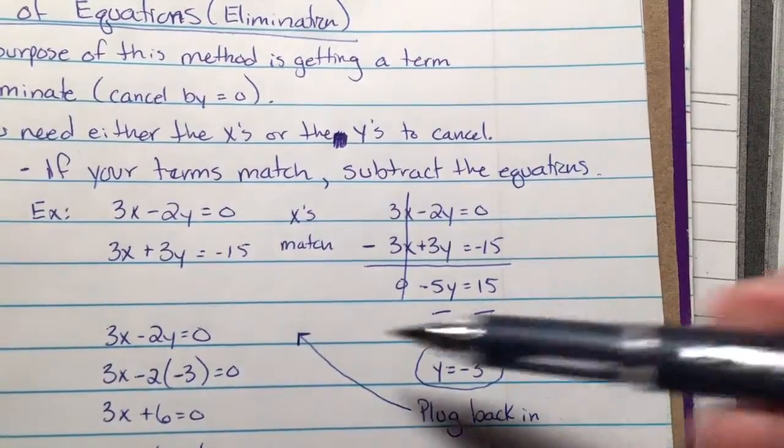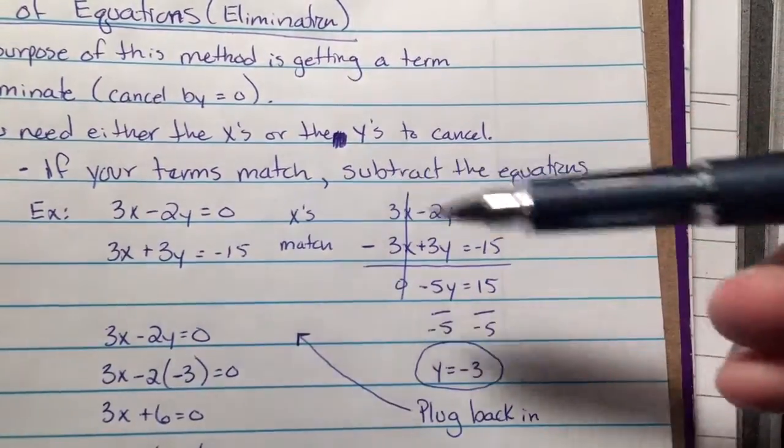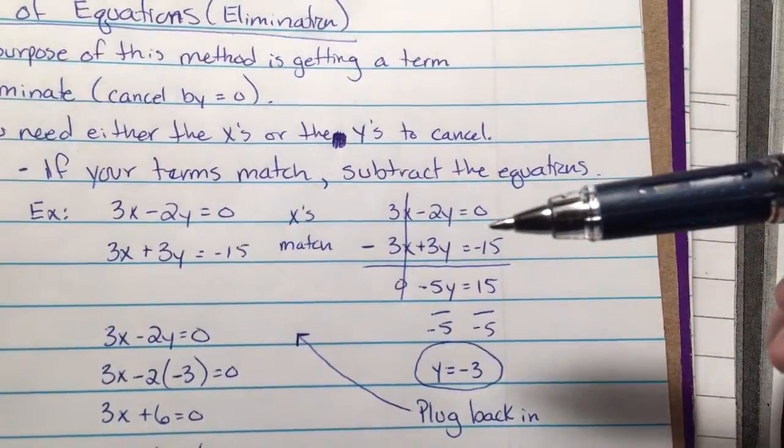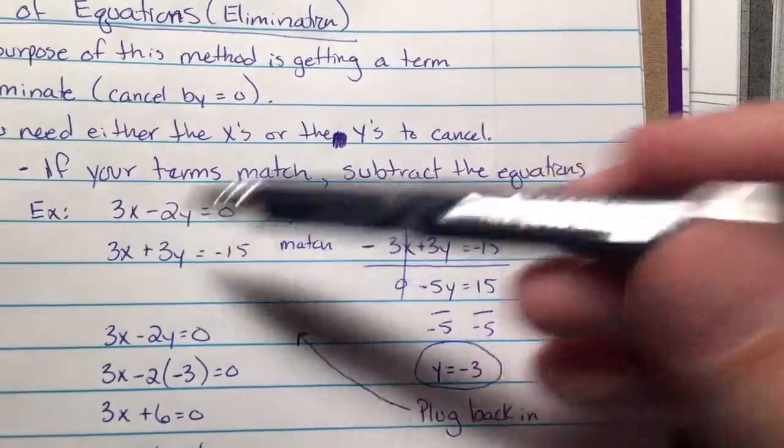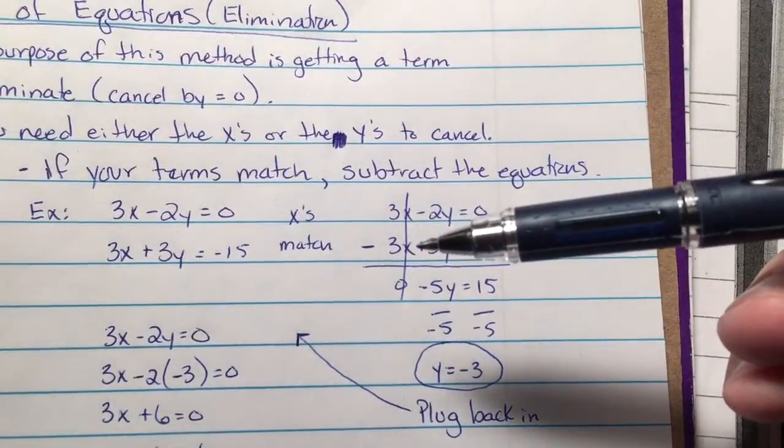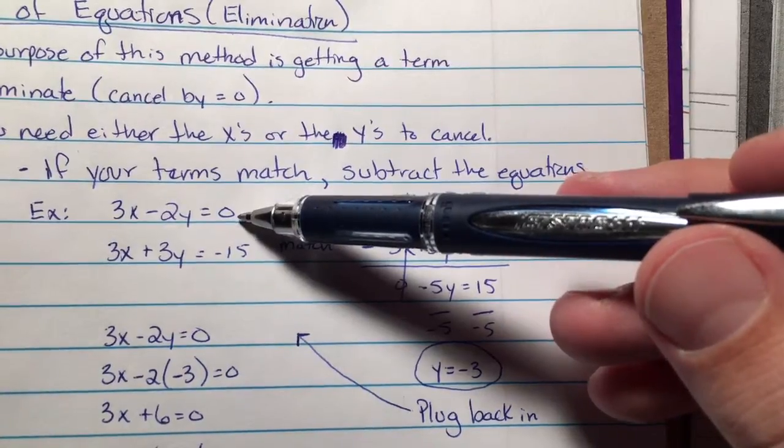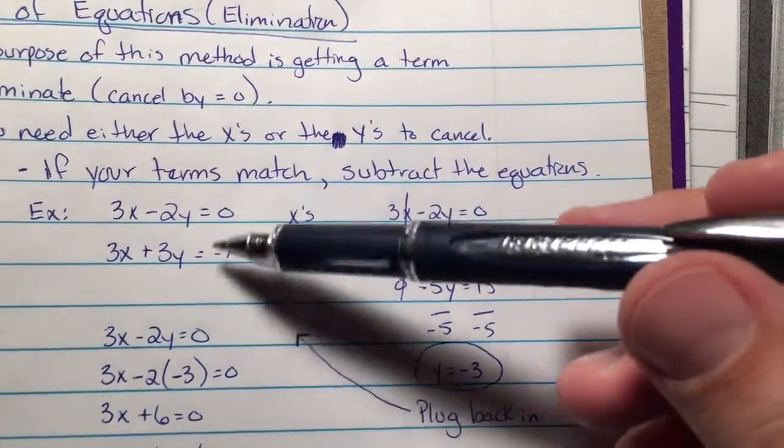Turn around and plug that back into either one of the original equations. It doesn't matter. Honestly, I like to pick the one that has the easier numbers. Usually I'll say the smaller numbers, but in this case, each term has nothing that's really a whole lot different. So I end up picking something that's easier. I like this one because it has a zero in it. You know, it would work out either way, though.